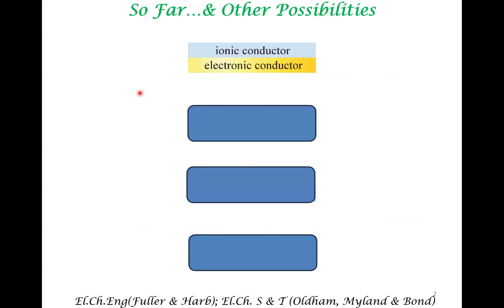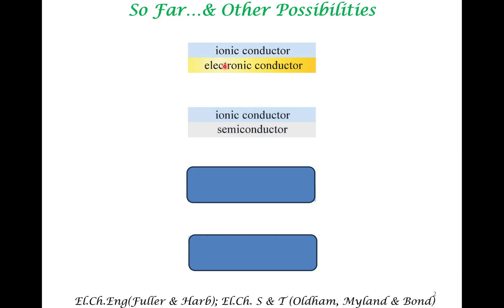So far in all our earlier lectures, we have looked at a particular kind of electrochemical system wherein an ionic conductor is interfaced with an electronic conductor. This ionic conductor is the electrolyte and the electronic conductor is typically a metal that is the electrode. However, there are other possibilities for interfaces which are of interest to electrochemistry. For example, you can have an interface between an ionic conductor and a semiconductor. That is going to be the central focus of this series of lectures.